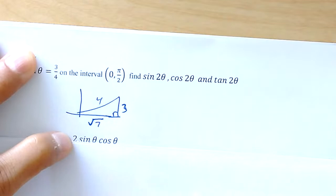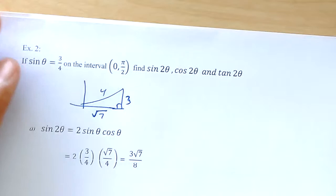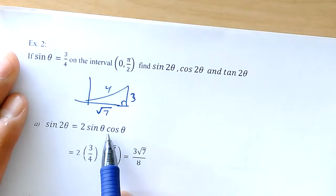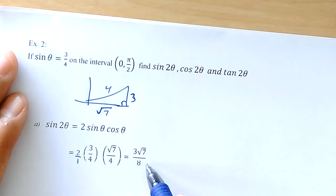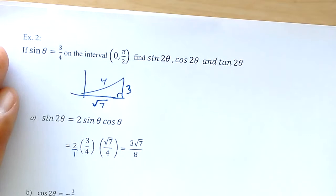For the sine of 2 theta: 2 times sine times cosine. The sine is that value and the cosine is that value. Multiplying everything on top and bottom, and reducing, gives the answer negative 1 over 8.